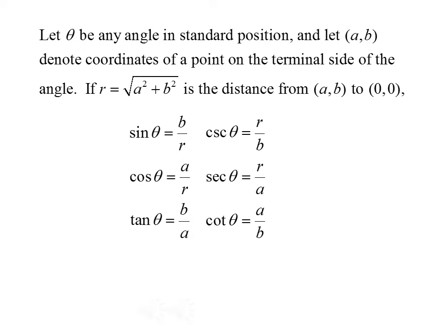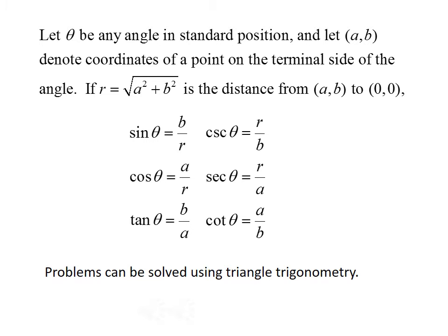Sine of theta equals b over r, cosine of theta equals a over r, tangent of theta equals b over a, cosecant of theta equals r over b, secant of theta equals r over a, and cotangent of theta equals a over b.